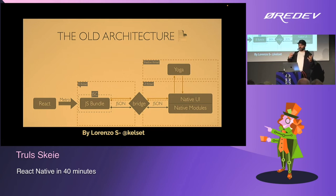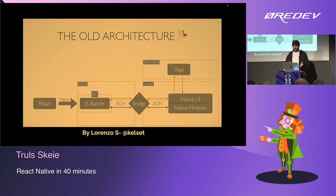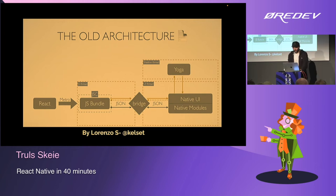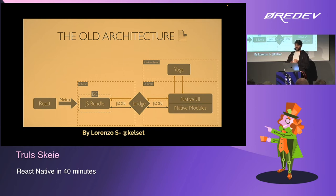The JavaScript thread is the same thread that executes JavaScript on any web page. There is a concept called the bridge, which is how JavaScript communicates with the UI thread and the native side of the platform. Yoga translates all the UI to native UI. And there's a concept called native modules for things like Bluetooth, camera, or anything specific to the platform.